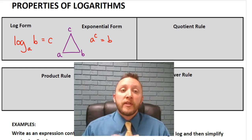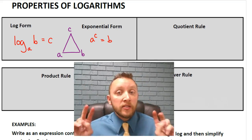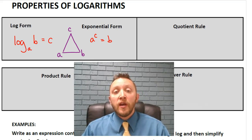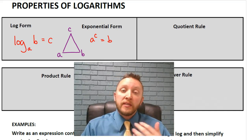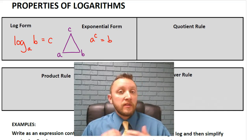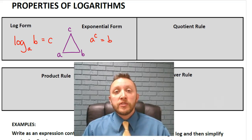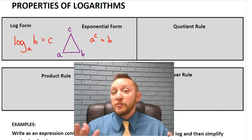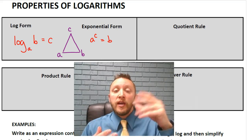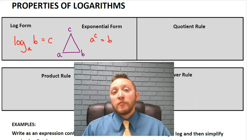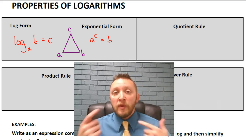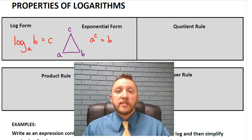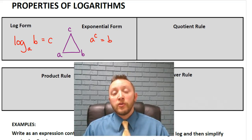So, remember we have this triangle of power that we called back in the previous unit that helped us understand how to work with logarithms. If you recall, the logarithm has a base, the value of the logarithm, and what it's equal to. And then remember in exponential form, we have your base, your exponent, and your value. Remember, all logarithms are equal to the exponent. If you remember that, it will help as we work on some of these other rules.